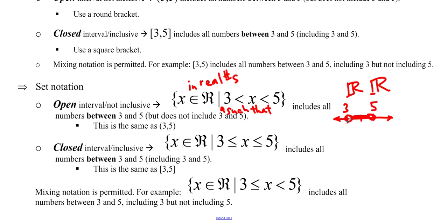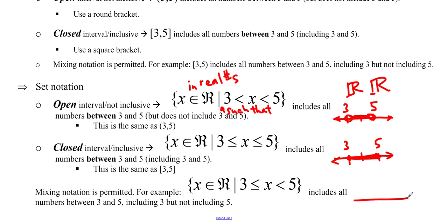We say it's in the real numbers because we're not just saying x equals 4 — we mean 3.1, 3.2, 3.9, and so on. A closed interval is inclusive: x ∈ ℝ such that 3 ≤ x ≤ 5. You can also mix notation — include 3 but not 5, giving a filled dot at 3 and an open dot at 5.